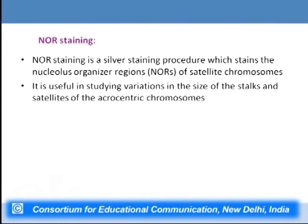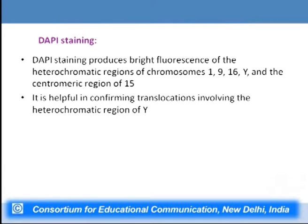NOR staining uses a silver staining procedure to stain the nucleolus organizer regions of satellite regions of chromosomes, very useful for studying variation in size of stalks and satellites of acrocentric chromosomes. DAPI staining produces bright fluorescence of heterochromatic regions of chromosomes 1, 9, 16, Y, and the centromeric region of chromosome 15, and is helpful in confirming translocation involving the heterochromatic regions of chromosome Y.